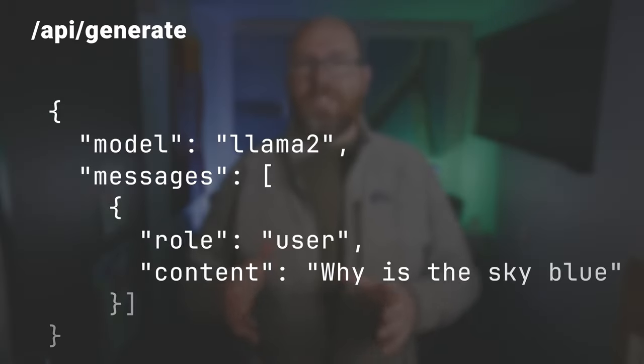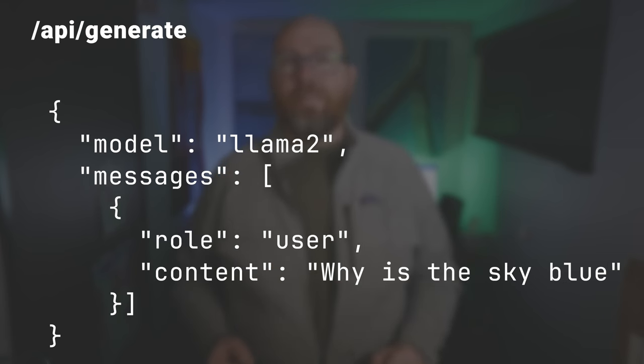For the chat endpoint, all the parameters are the same with a few exceptions. The context, system, and prompt parameters from generate are replaced with messages. Messages is an array of message objects that can include the system prompt, the prompt from the user, examples of any output, and any memory or context you want to send to the model. Each message has a role, which can be system, user, or assistant. Content is the actual text of the message, and optionally images is the array of images to send for multimodal models. I'll do some more complex examples later when we get to the library.